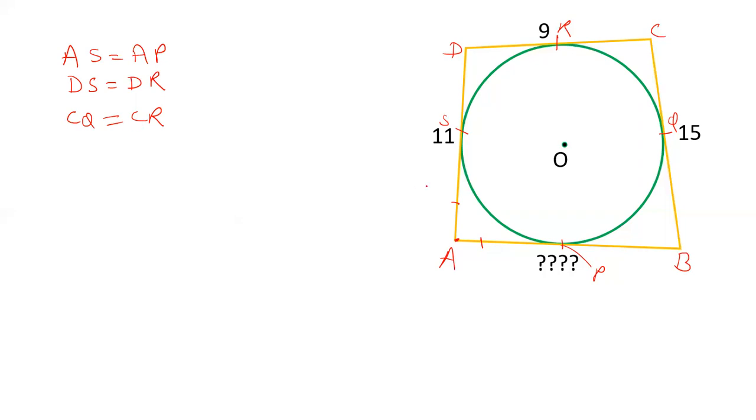Similarly, if I take point B, then PB and BQ are equal, so BQ equals PB. Now add the equations: AS plus BS plus CQ plus BQ equals AP plus DR plus CR plus PB.